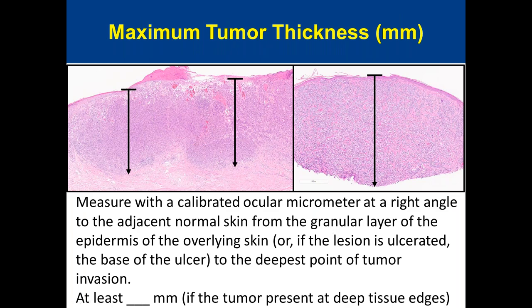To measure tumor thickness, we use a calibrated ocular micrometer placed at a right angle to the adjacent normal skin, measuring from the top of the granular layer all the way down to the deepest point of tumor invasion. For ulcerated melanoma, measurement begins from the base of the ulcer down to the deepest invasion. If the tumor is transected at the base, report thickness to the deep margin and note the limitation of thickness assessment in a comment, since you don't know how far the tumor extends.